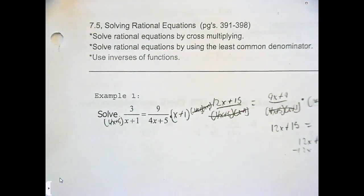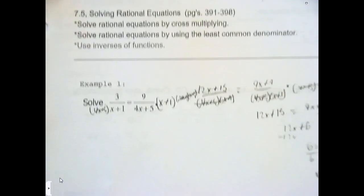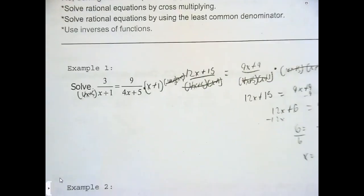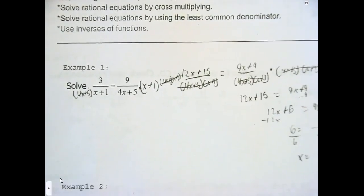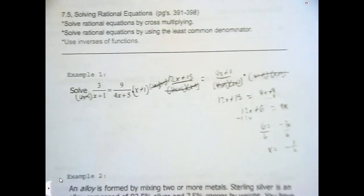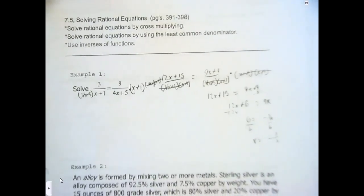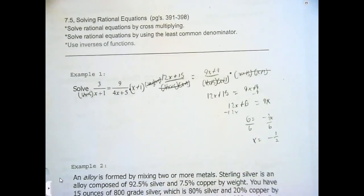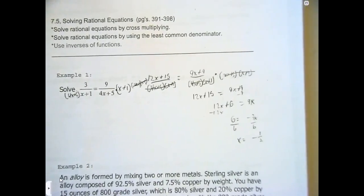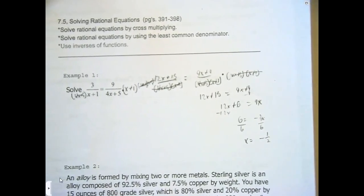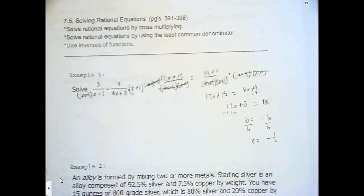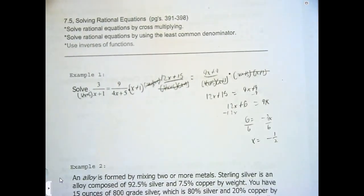Were you trying to find the common denominator? You can do these by finding the common denominator, but it takes too long and you will not finish your test or quizzes on time. So if you're doing that process, move to cross multiply.